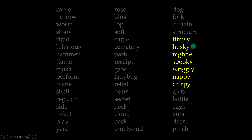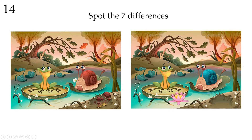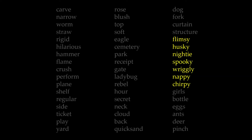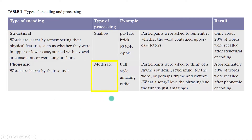Once again: flimsy, husky, nighty, spooky, wriggly, nappy, and chirpy. Just like last time, there's an activity to do for 15 seconds, and then we'll test your memory. So because we went a little bit deeper with our processing, hopefully you were able to remember more words this time. Psychologists describe this type of encoding as phonemic, and this would be considered a moderate level of processing. Because it's gone a little bit deeper than that first level, you should have been able to remember a little bit more.